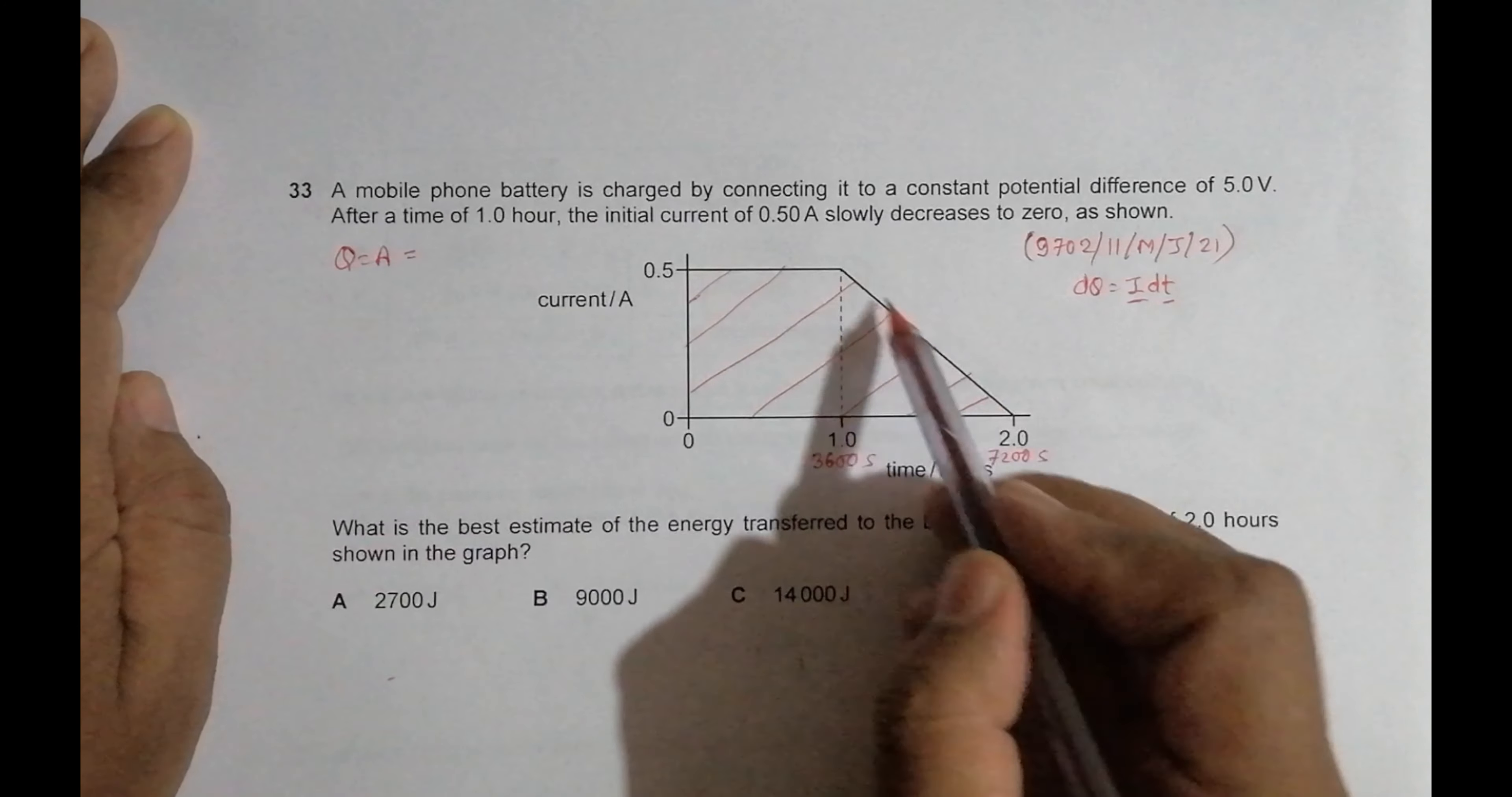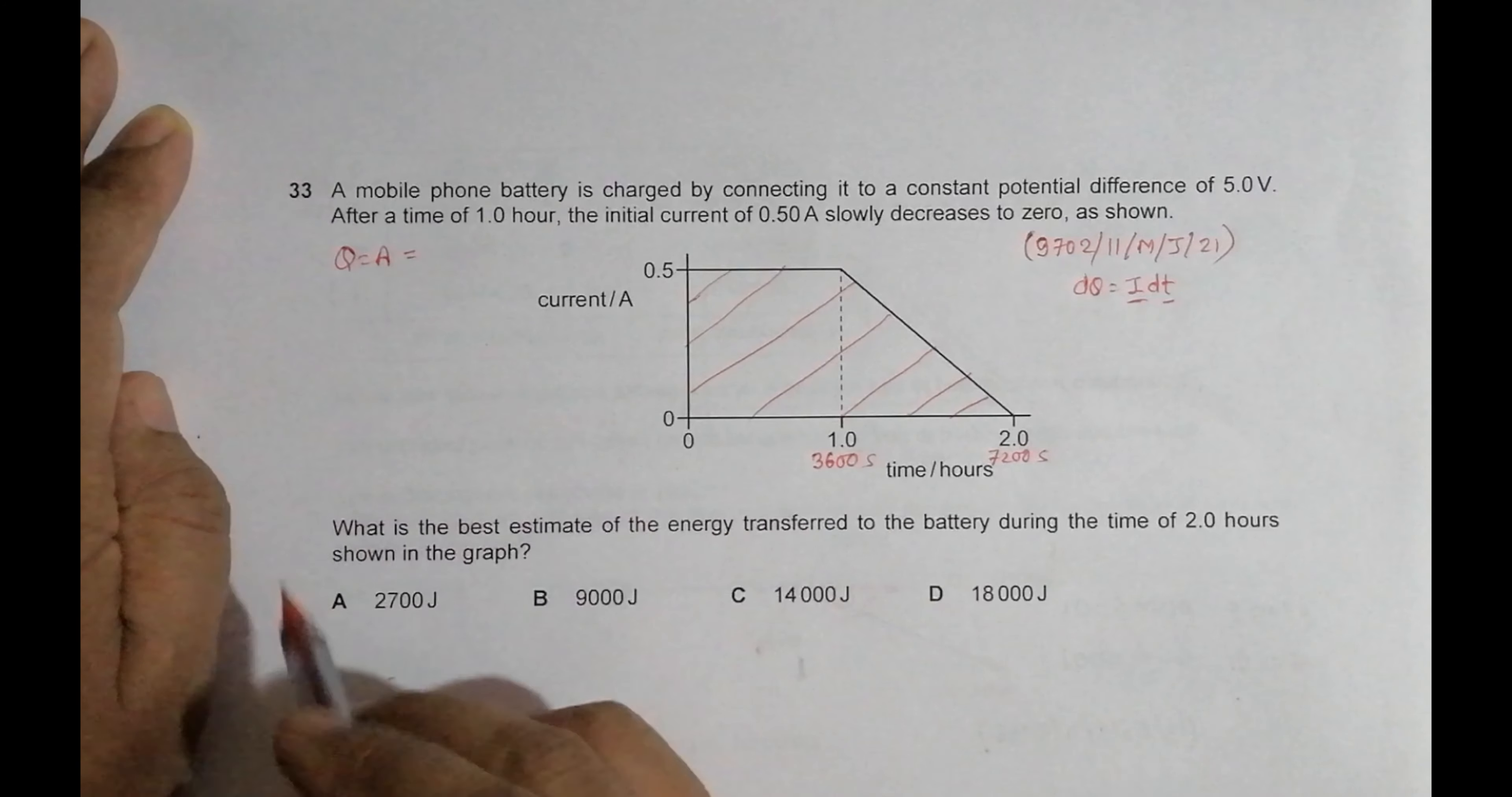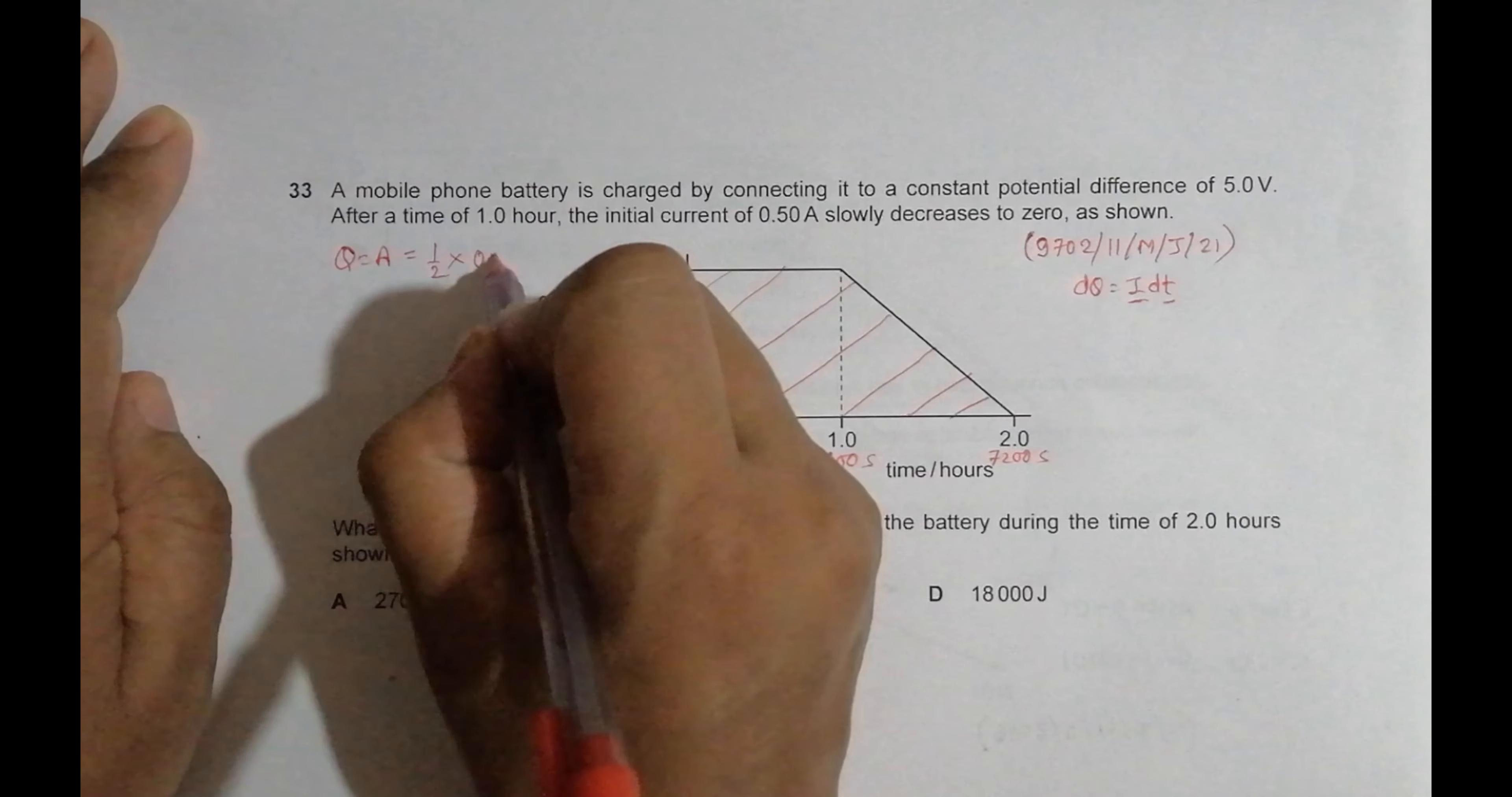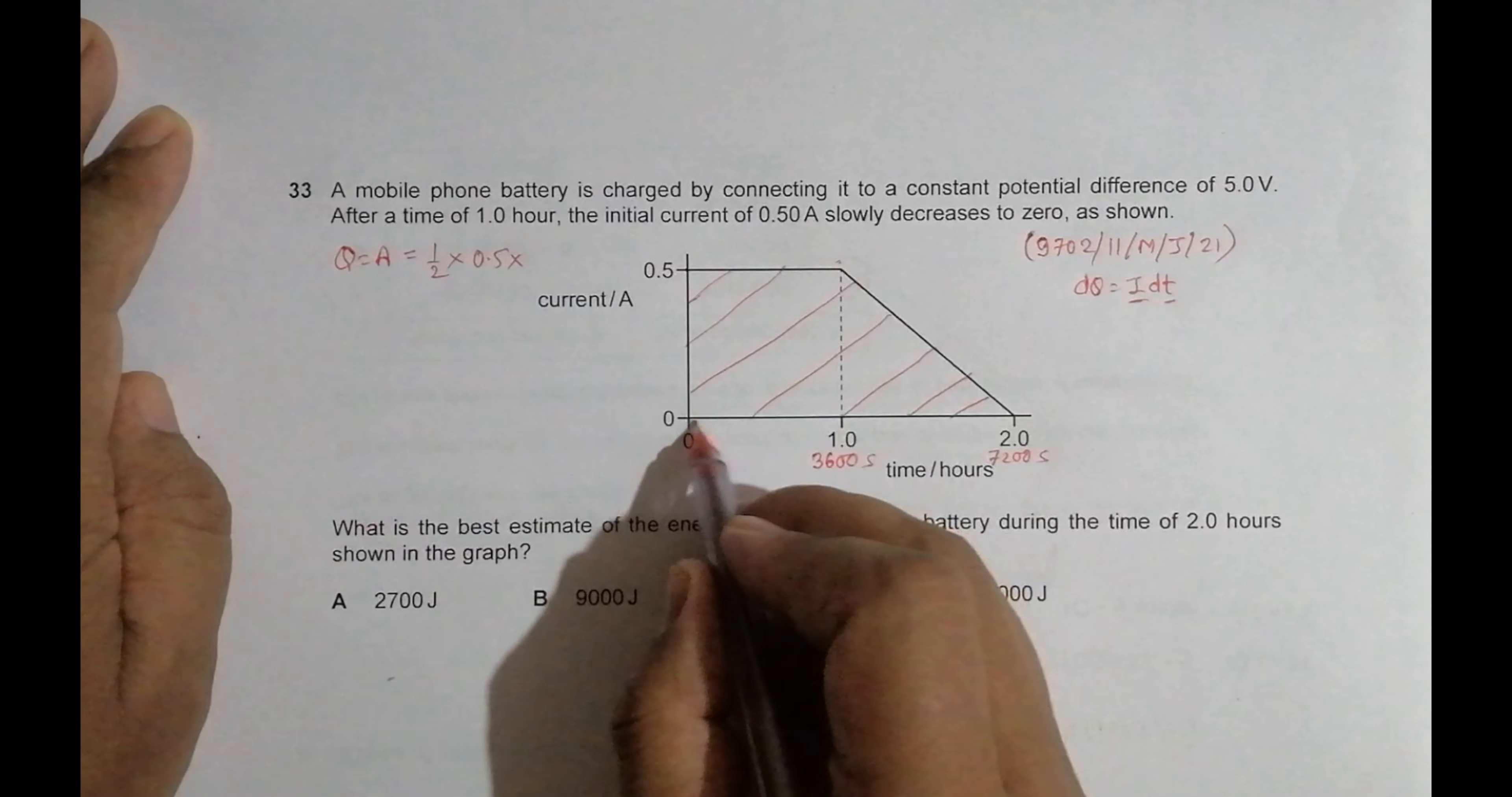The figure here is a trapezium. The area of the trapezium is equal to 1/2 times the perpendicular height, which is 0.5, times the sum of parallel sides. So it should be equal to 3600 plus 7200.